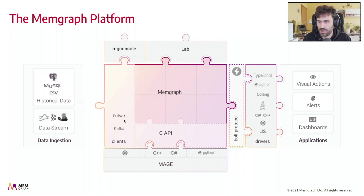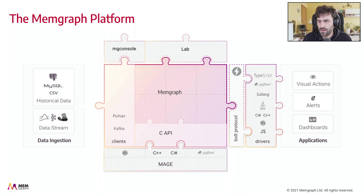It's important to emphasize that Memgraph now contains these two clients — Kafka and Pulsar — because there is no need to build custom microservices to transform data and put it into Memgraph, nor is there any need to install these clients manually or deal with them in any way, which might be tricky and time-consuming.